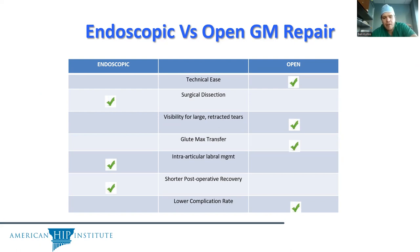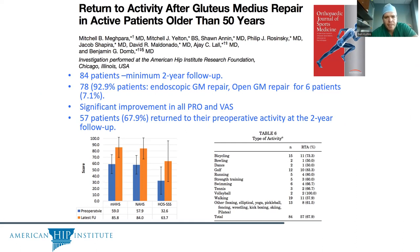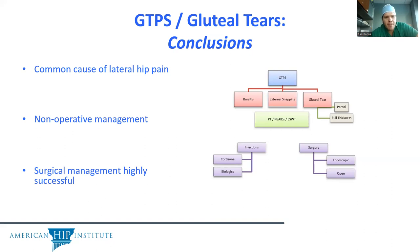Looking at the pros and cons of endoscopic versus open gluteus medius repairs, it's really going to be dependent on the type of tear. You wouldn't want to treat a full thickness retracted tear endoscopically, and you wouldn't necessarily want to treat a partial thickness undersurface tear open — so you want to tailor the treatment to the correct diagnosis. Results show that more active patients have high rates of returning to activities they weren't able to perform due to their pathology. In general, abductor tears are a common cause of lateral hip pain. We focus first on non-operative management, but if that fails, there are numerous surgical treatments that have shown to be not only successful but also durable at five years postoperatively.